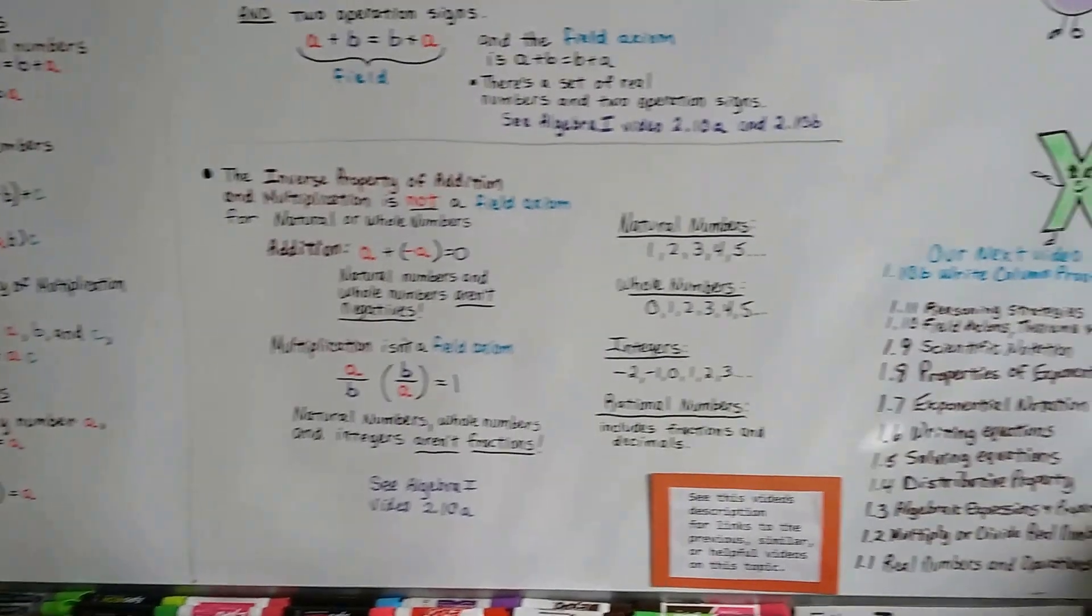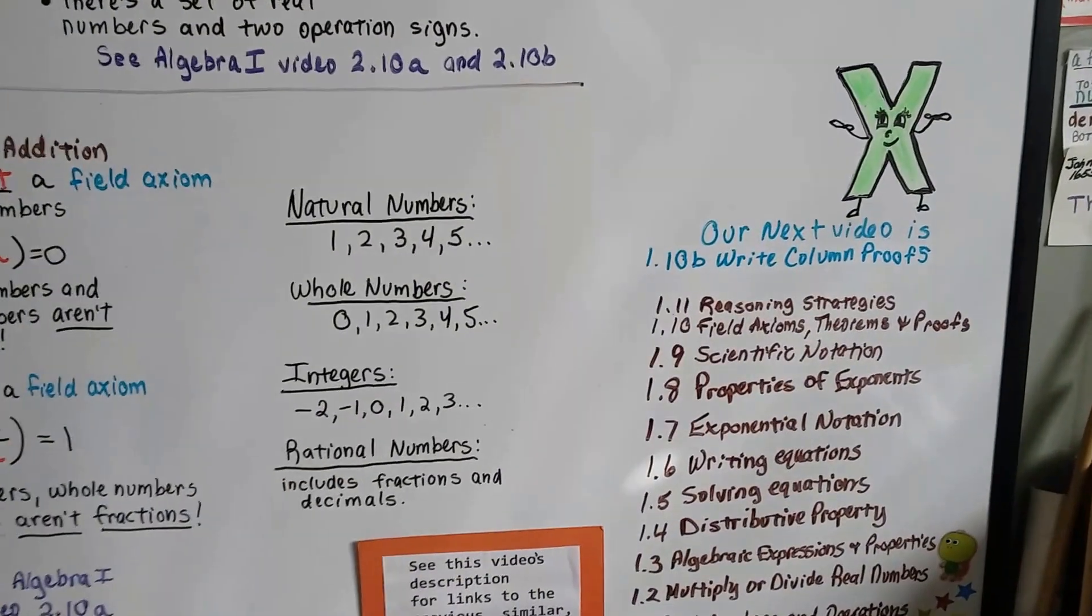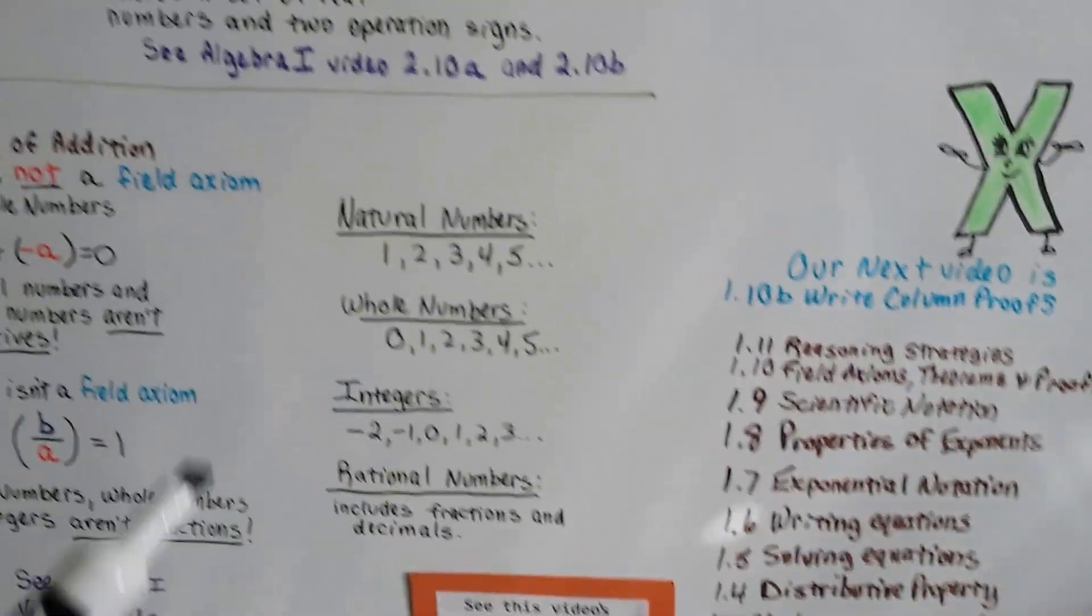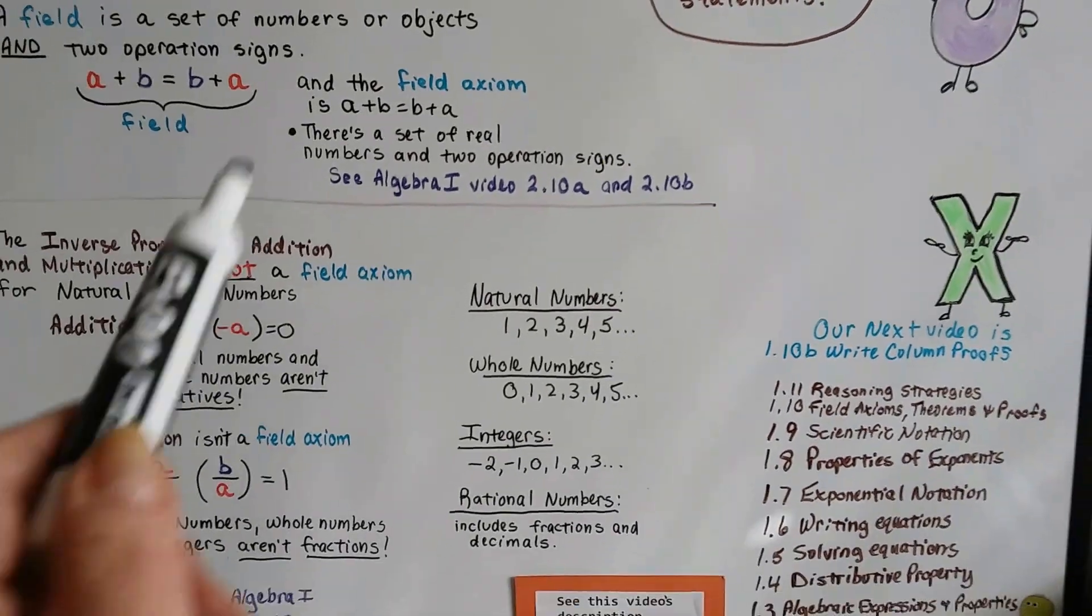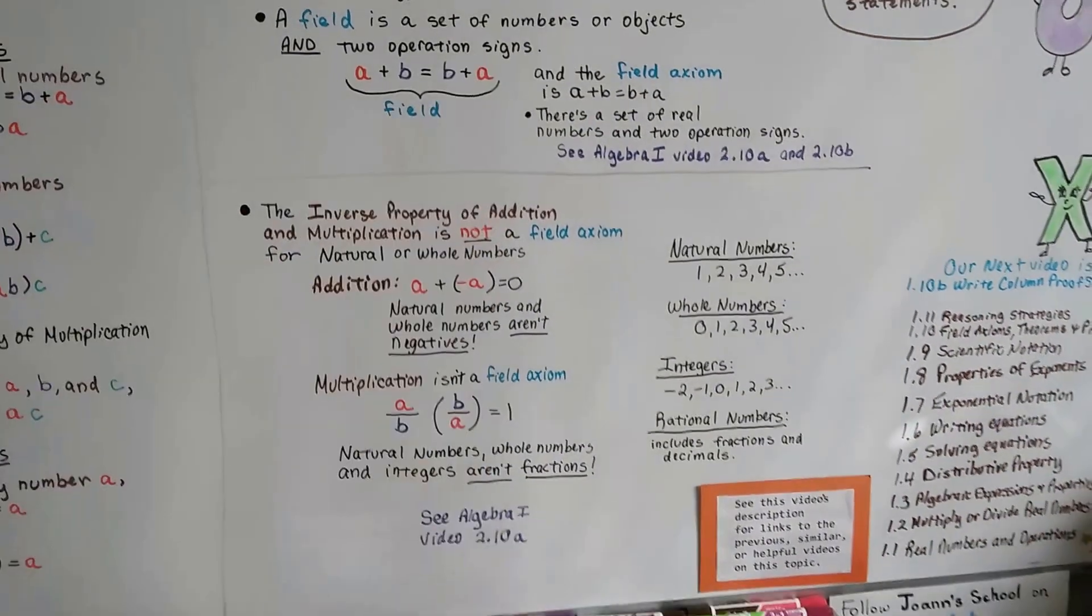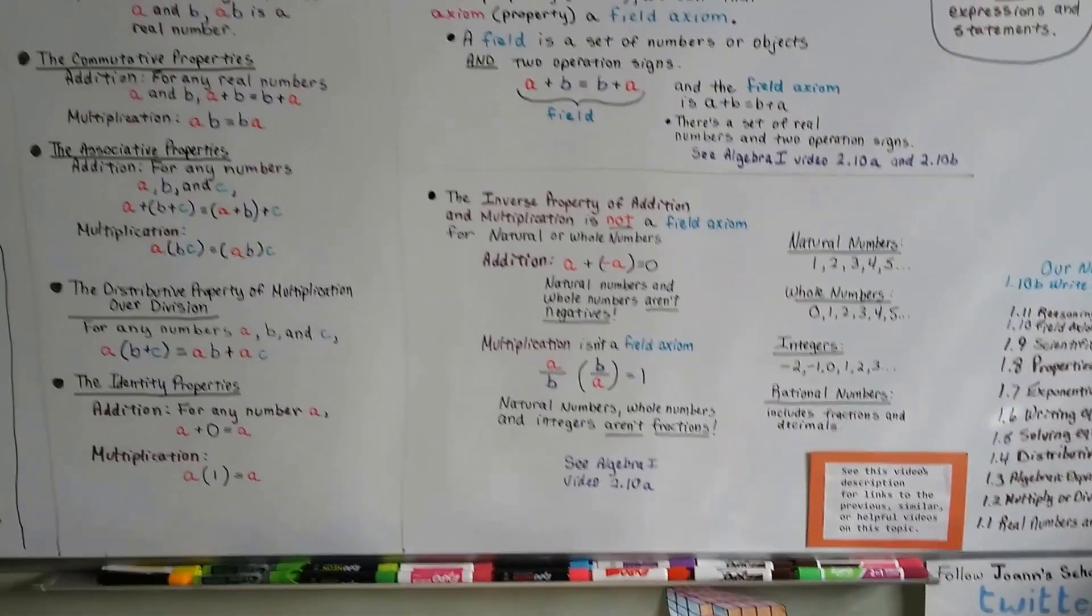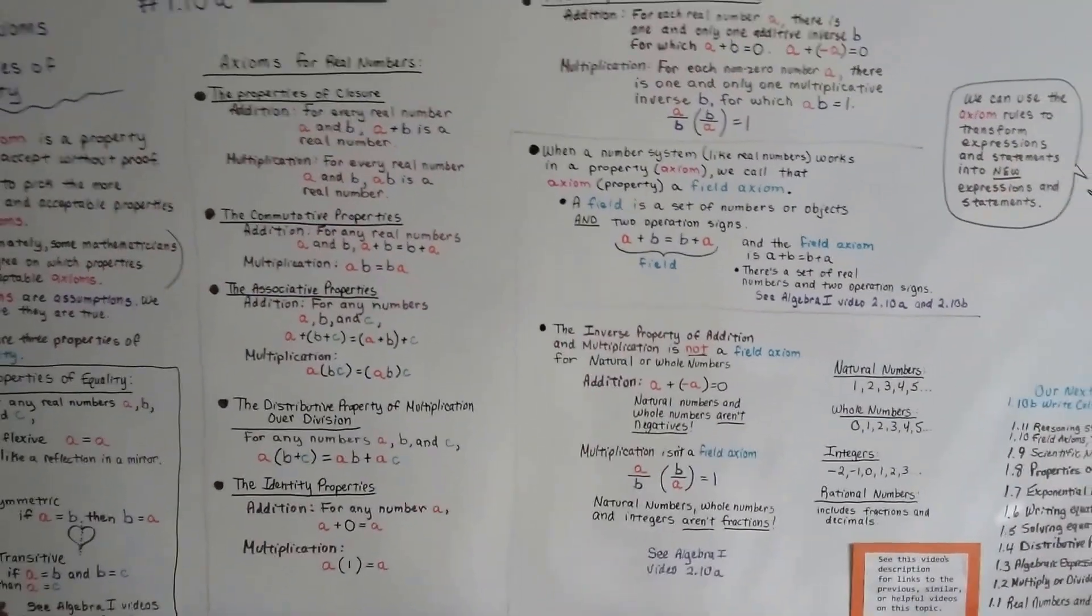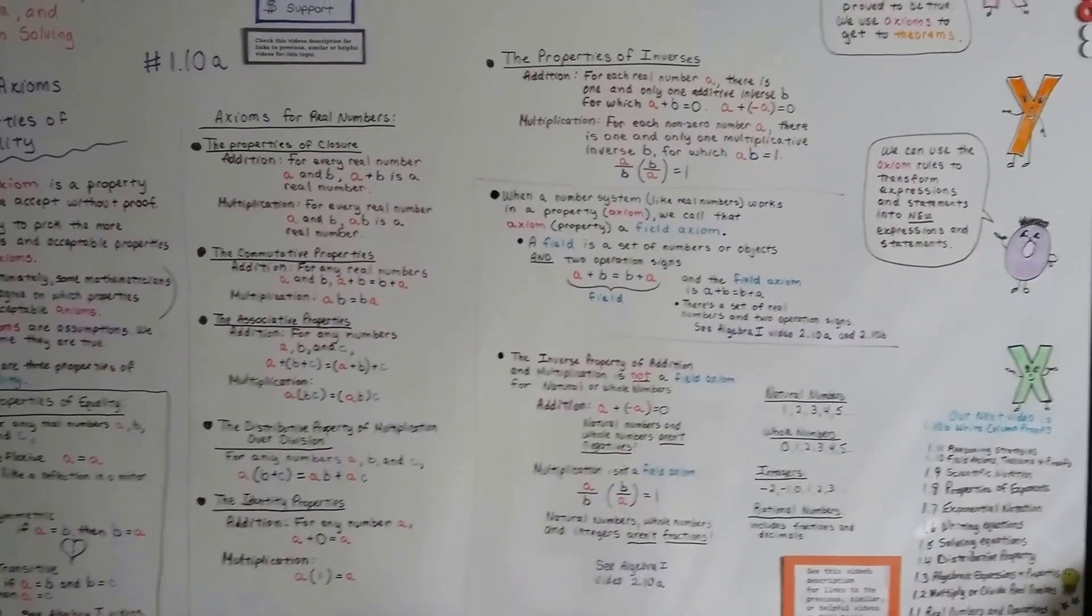Our next video is 1.10b, and we're going to write a column proof with our statements on one side and our reasons on the other, and they're going to be numbered. Alright, I hope I'll see you there, and I hope you're doing okay. Bye.